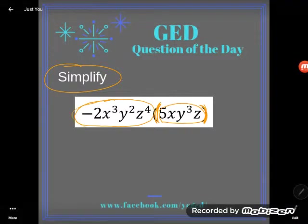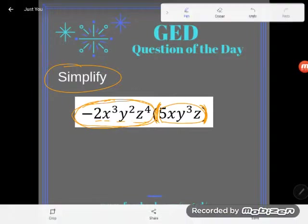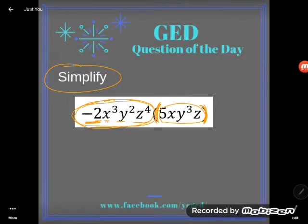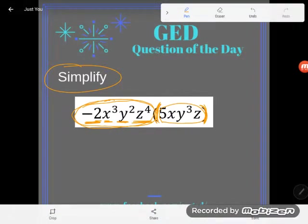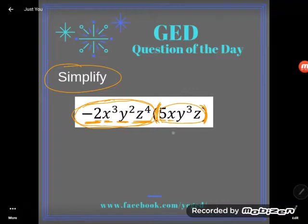Remember that a number like this, an algebraic expression, when things are just shoved together like this, is already multiplying. So this number, it's negative 2x cubed y squared z to the fourth. But what does that mean? That means negative 2 is multiplying with x to the third power, which is multiplying with y to the second power, which is multiplying with z to the fourth power. Same thing with this number over here. This number is also made of four things multiplying: a 5, an x, a y cubed, and a z.